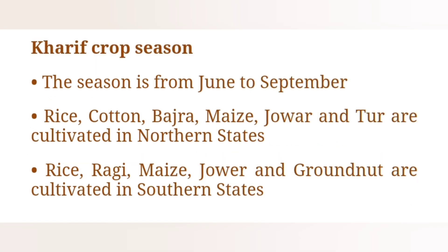Kharif crop season: the season is from June to September. Rice, cotton, bajra, maize, jowar and tur are cultivated in northern states.